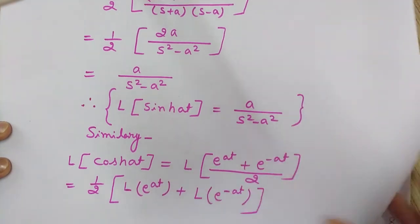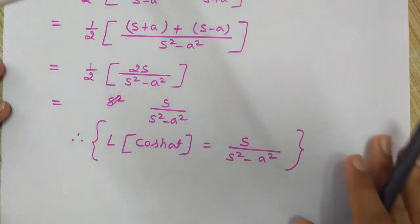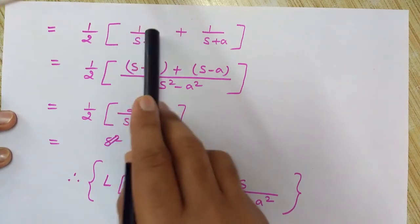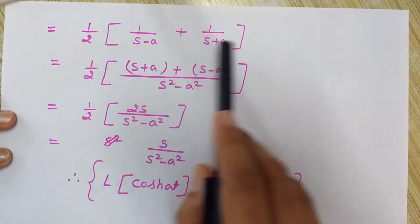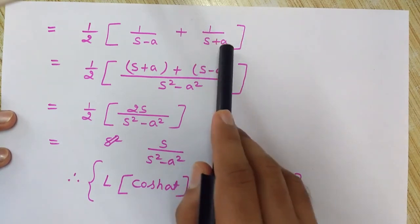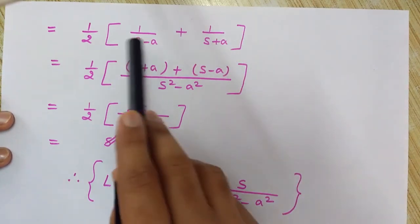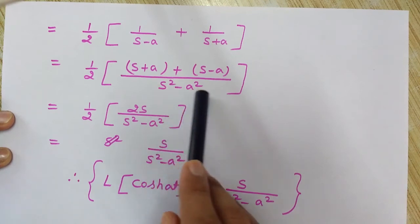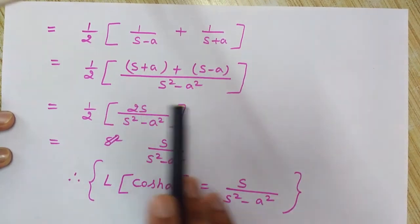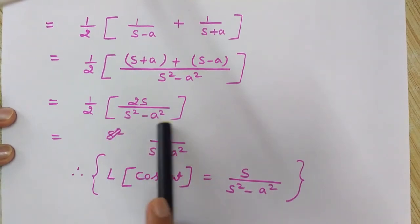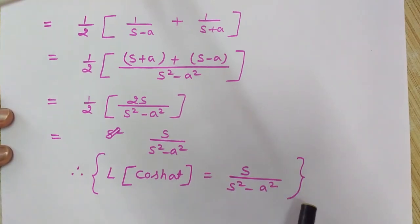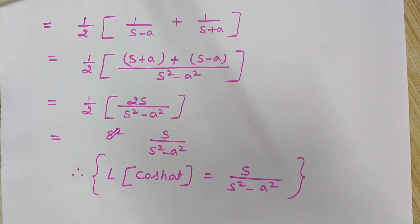We use the formula: the Laplace transform of e^(at) is 1/(s minus a), and of e^(-at) is 1/(s plus a). Taking the LCM, which is s squared minus a squared — using the (a+b)(a-b) form — and performing the simple mathematical operation, we ultimately get the Laplace transform of cosh(at) as s divided by s squared minus a squared.